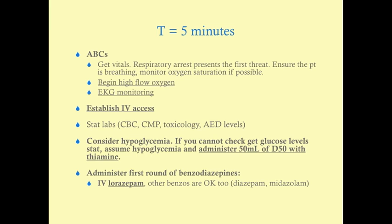We should be establishing IV access as quickly as we can. Laboratories should be drawn: CBC, CMP, toxicology, and anti-epileptic drug levels. The CBC, CMP, and toxicology we can get really quickly — that's going to help differentiate the diagnosis and the cause of the seizure. Anti-epileptic drug levels often have to be sent out and won't come back immediately.